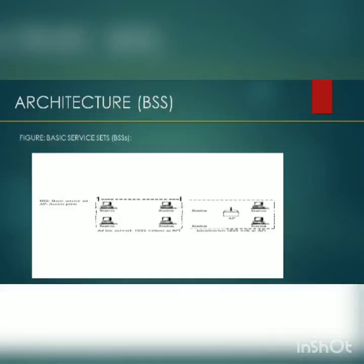A standalone network that cannot send data to other BSS is called ADHOC architecture. In this architecture, stations can form a network without the need of an AP. They can locate one another and agree to be a part of the BSS.